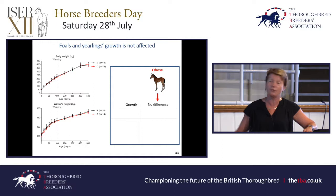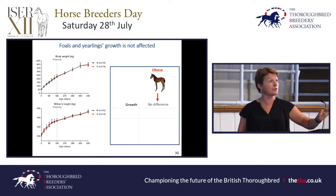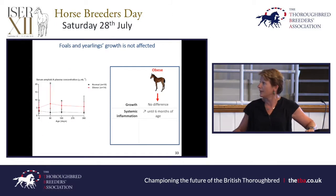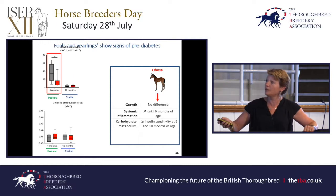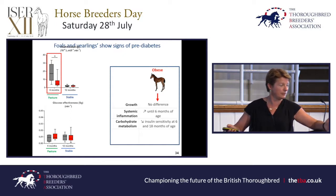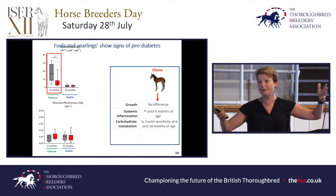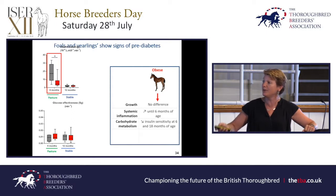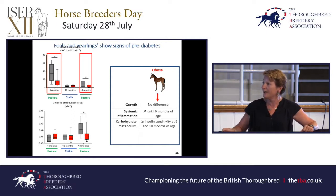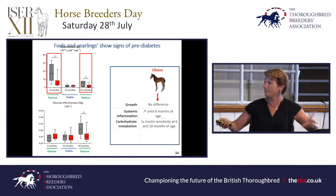What did we see in foals? Looking at growth — nothing: if you just look at foal weight, you won't see anything. However, they had increased systemic inflammation as foals, and were already insulin resistant at six months of age. At 12 months when we put them in stables — where they are on automatic concentrate distributors and eat all day rather than in meals — the effect seemed to disappear, which may be an environmental effect we plan to test in the next experiments. But when they came back after the winter, they still had this pre-diabetes profile.